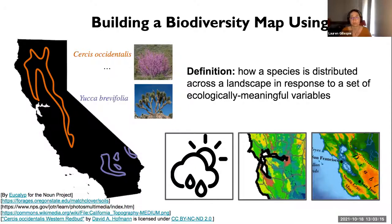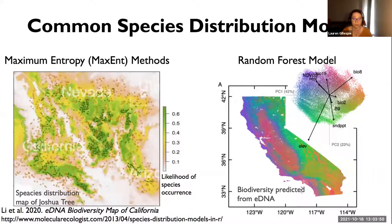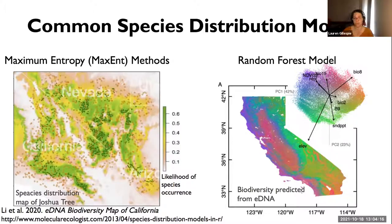SDMs are often used to predict the full extent of where a species lives using observations where species have been found, correlating those with environmental variables including climate data such as average rainfall or sun exposure, soil composition, or elevation. Two very common SDM approaches are maximum entropy methods (Maxent) and random forest models. Maxent models a single species distribution by maximizing the likelihood of the species occurring at observed locations (presence points) while jointly minimizing the likelihood at pseudo-absence points. The resulting map describes the likelihood of finding a species, such as a Joshua tree, across its range in Southern California.